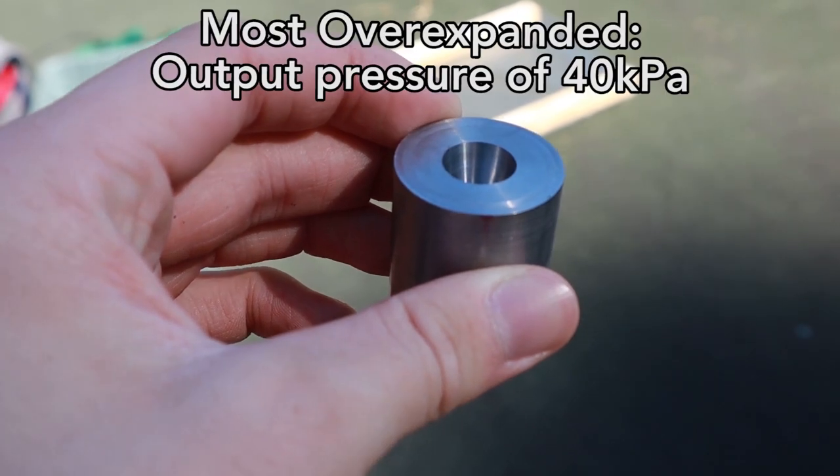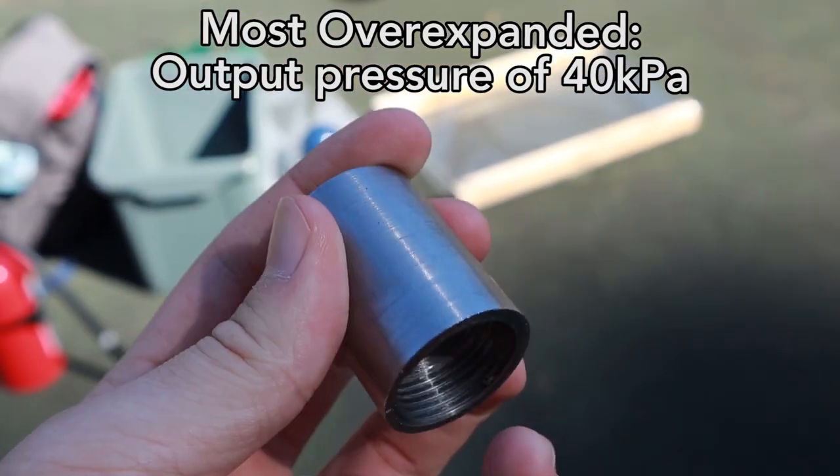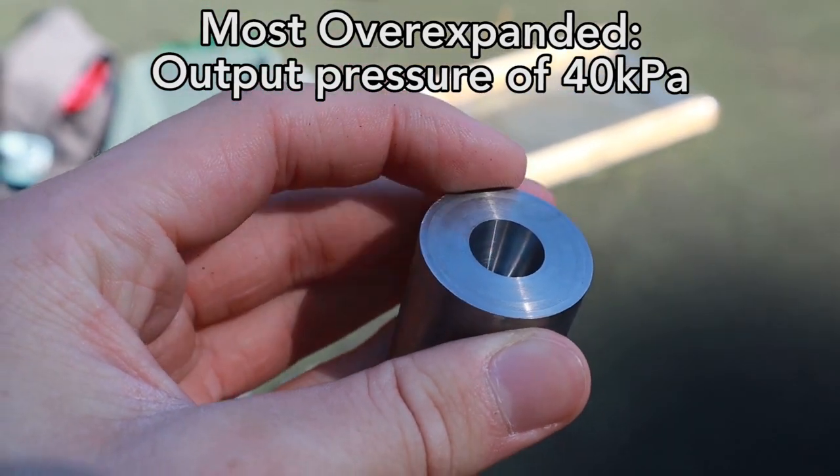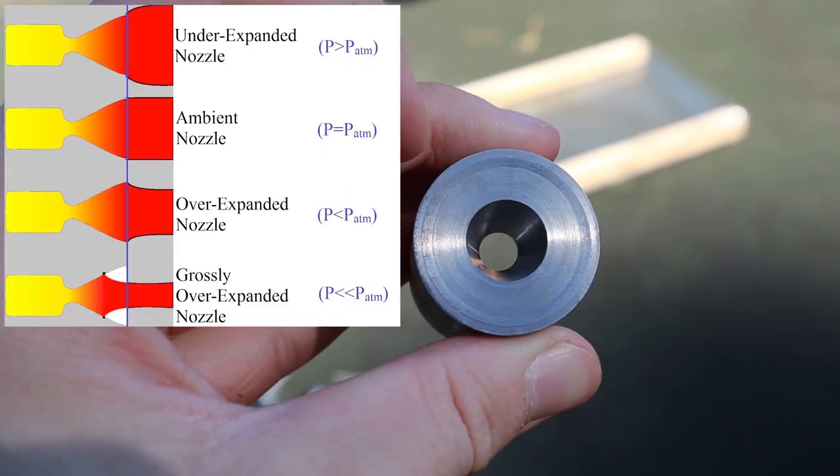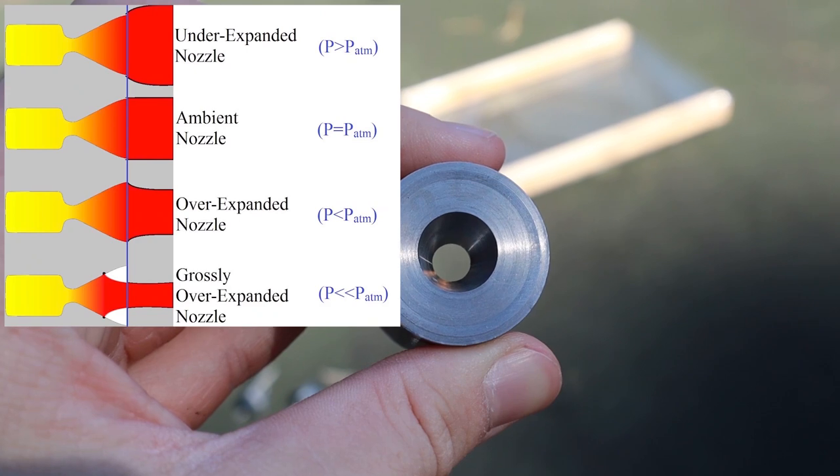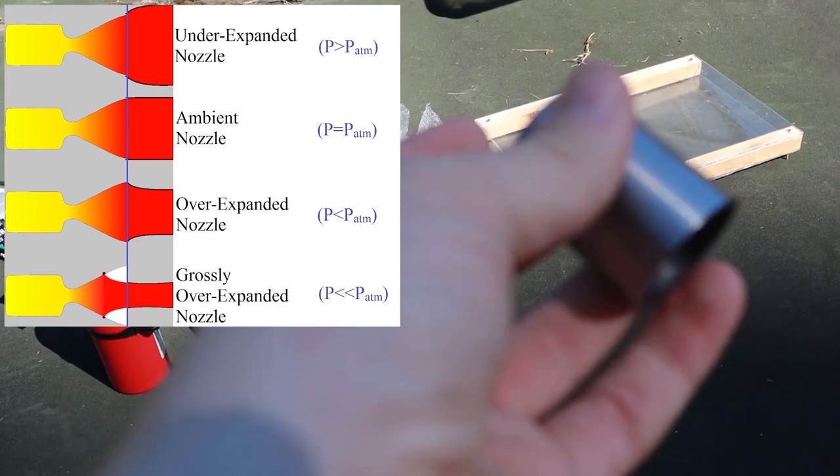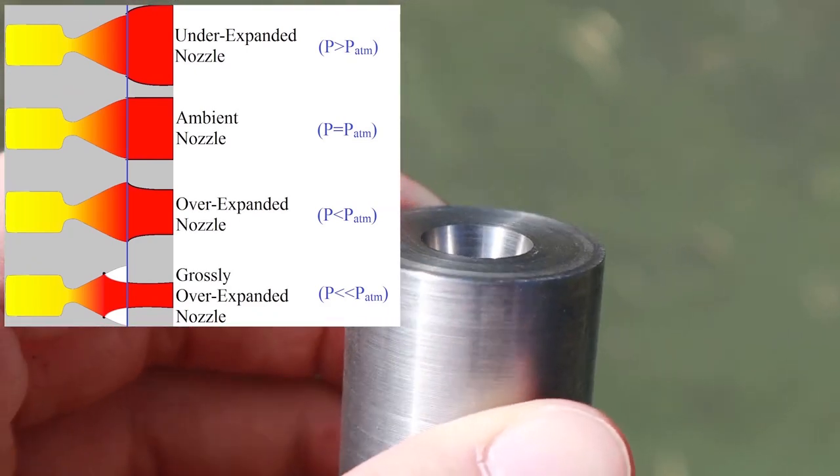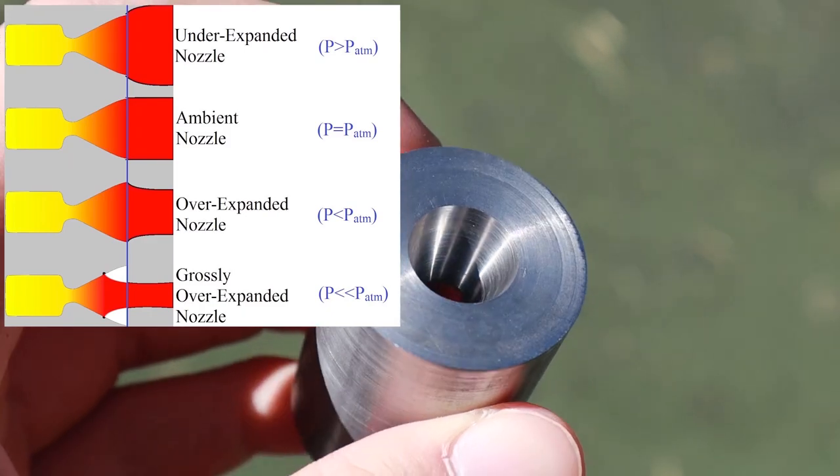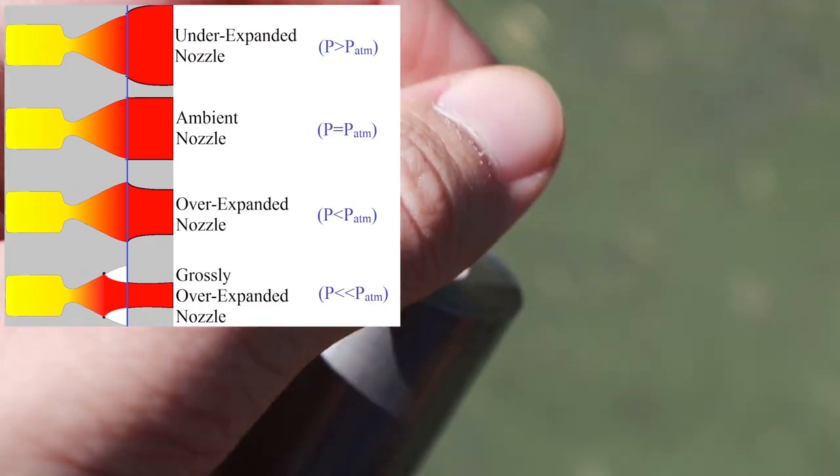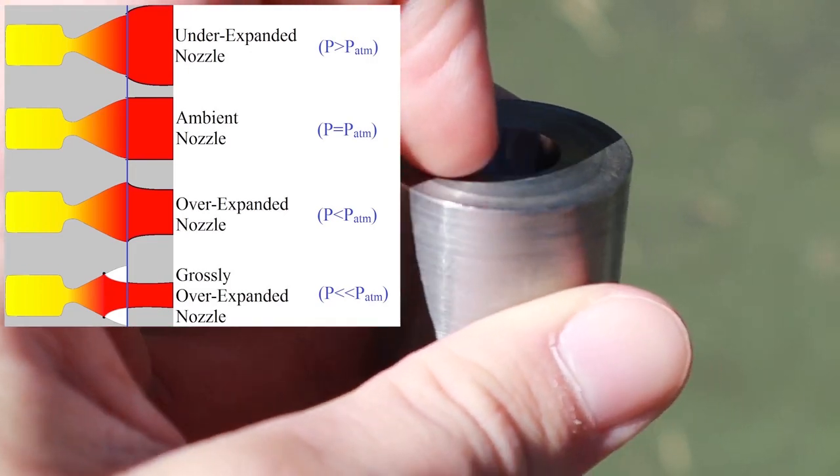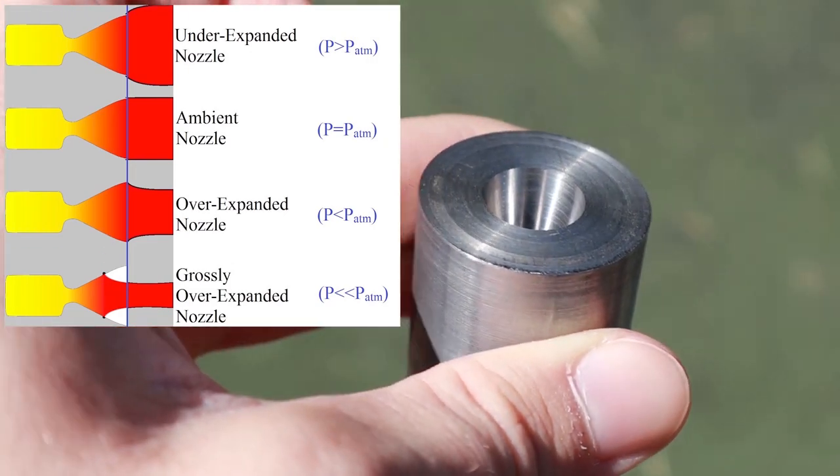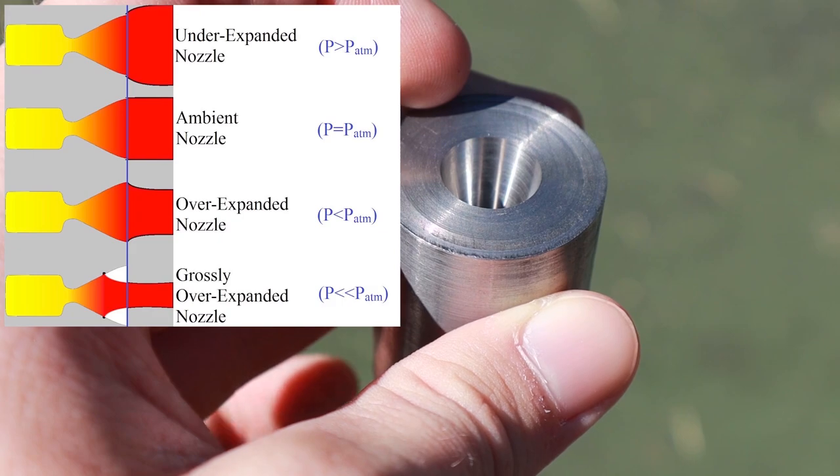So this is the most over-expanded nozzle. And essentially what that means is that the exit pressure out here will be approximately 40 kilopascals, which is significantly smaller than the ambient air pressure. So essentially what you're expecting to see is that the exit exhaust is going to look pinched in here. And that's because the exit pressure here is 40 kilopascals compared to the ambient air pressure, which is approximately 101 kilopascals.